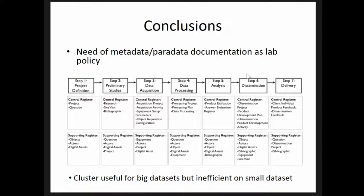I'd like to show a diagram of the workflow we tried to implement as lab policy, especially step four, which is about data processing. The cluster is useful for huge datasets, but it's completely inefficient for small datasets. If you are just documenting a small object, there's no interest in setting up a cluster. It's really important to assess what your processing needs actually are.